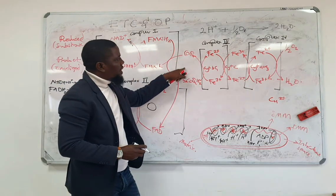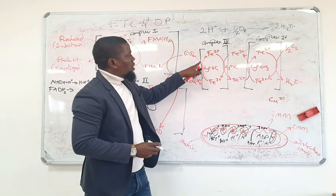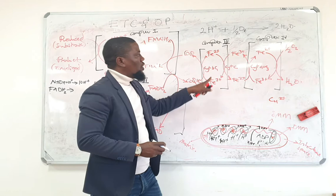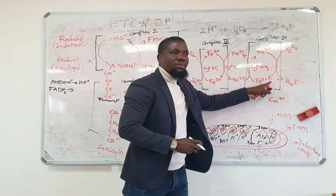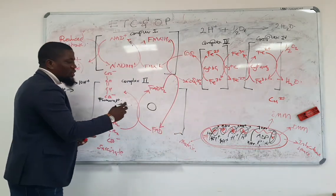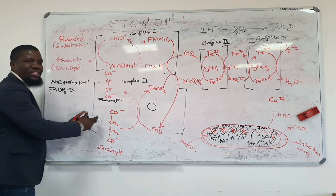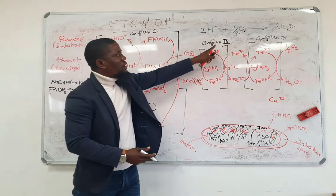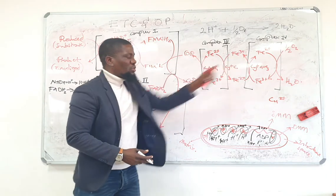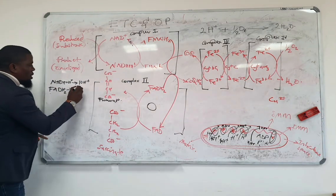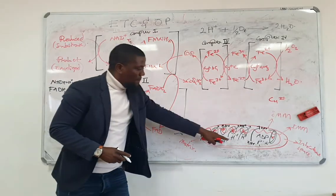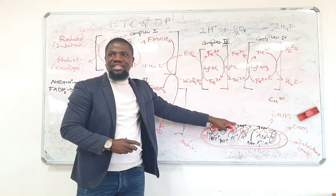So once they get to coenzyme Q, as they pass through complex three, it's going to be four again, and complex four is going to be another two. So how many in total would move if you are dealing with FAD? It's going to be four and two. That's six. So six hydrogens would move from the matrix into the intermembrane space.